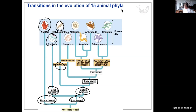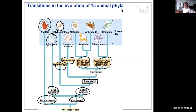Others do have a body cavity. A coelom is a cavity within the body that contains organs — distinct from the gut. Some organisms have a pseudocoelom, like the Nematoda (roundworms). The protostomes include Mollusca, Arthropoda, and Annelida. The deuterostomes include Echinodermata and Chordata.